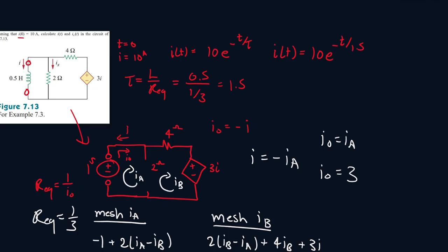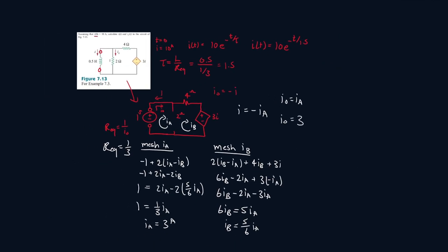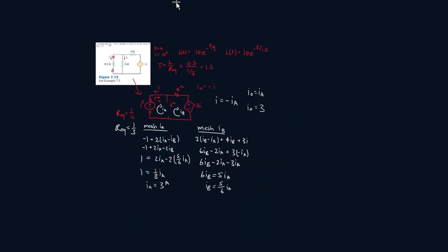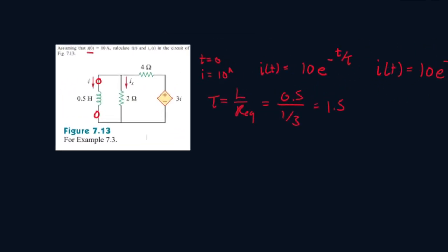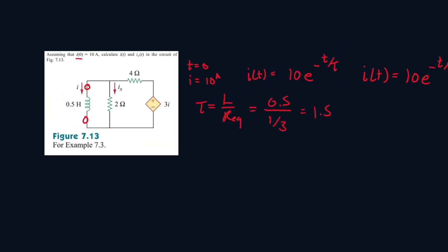Now we just found I. Now we have to find Ix. To find Ix, if we know the voltage at this region V, then if we divide the voltage by 2, we would be able to find Ix. So what we're going to do is try and find the voltage at this region.